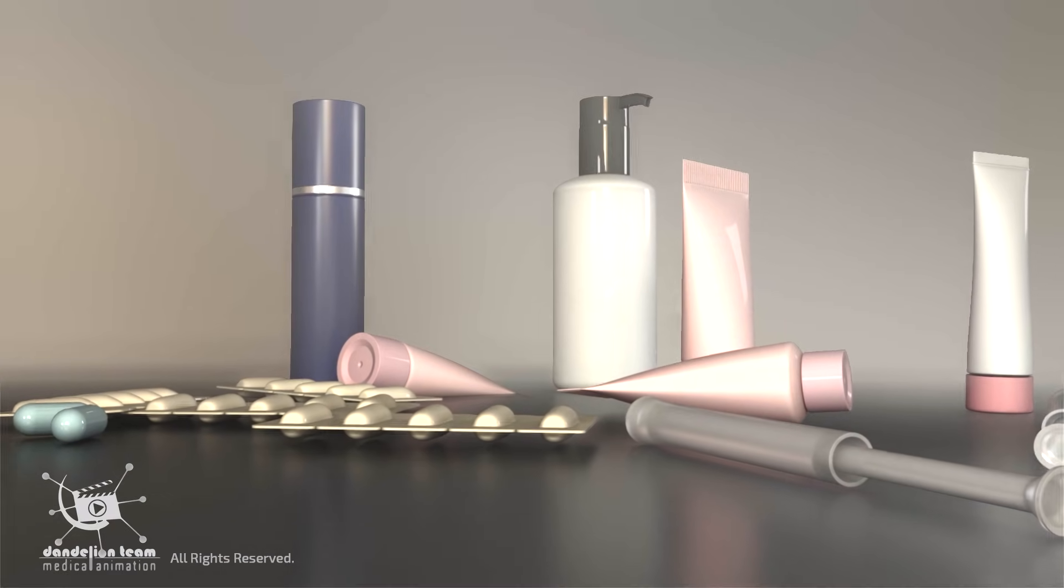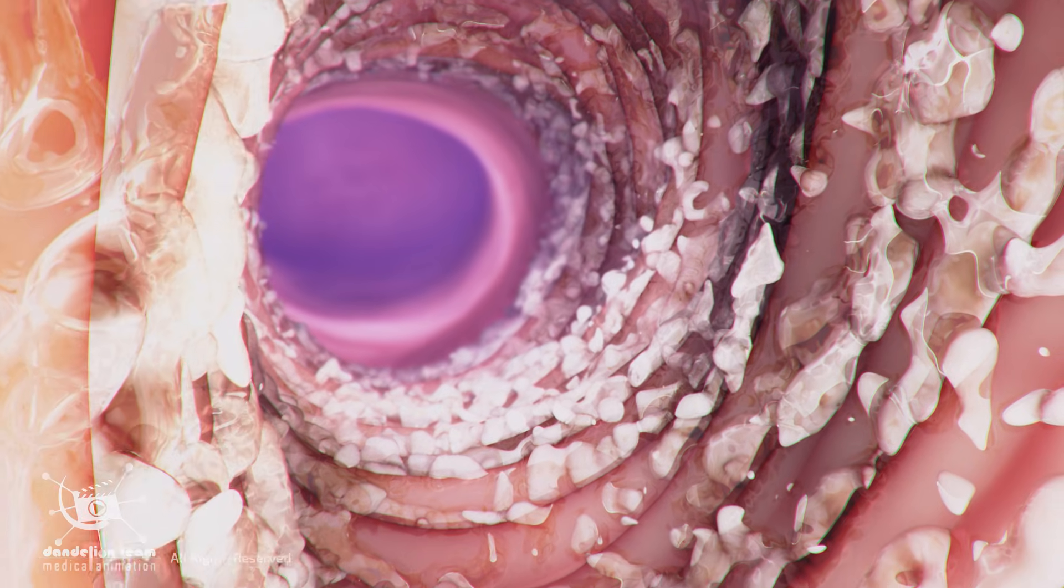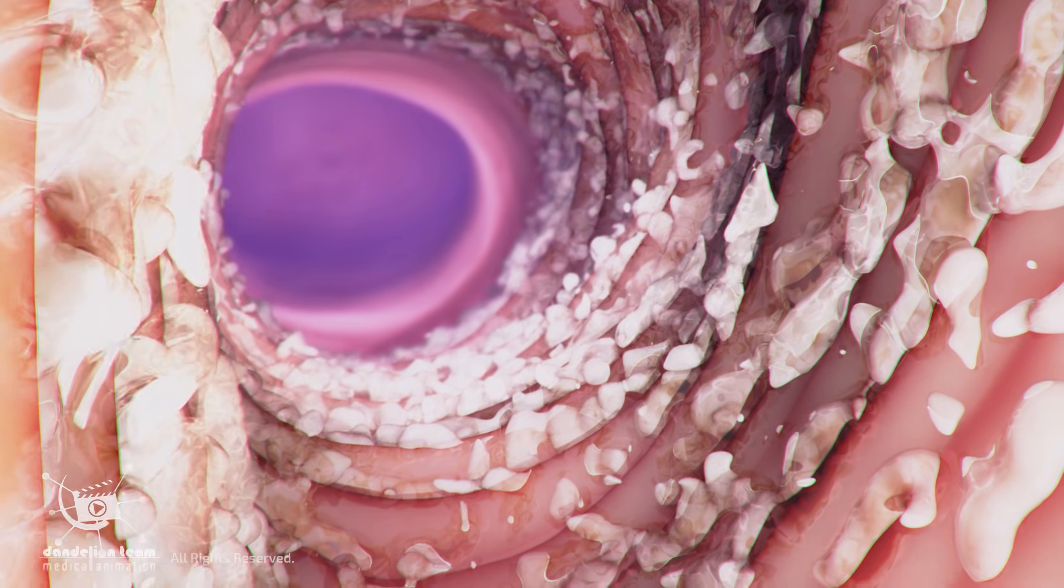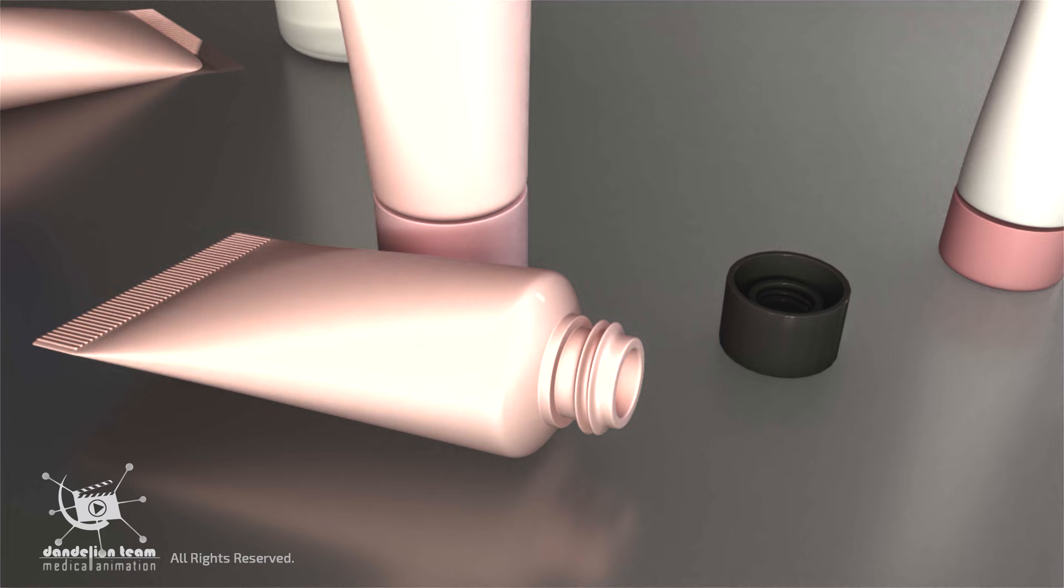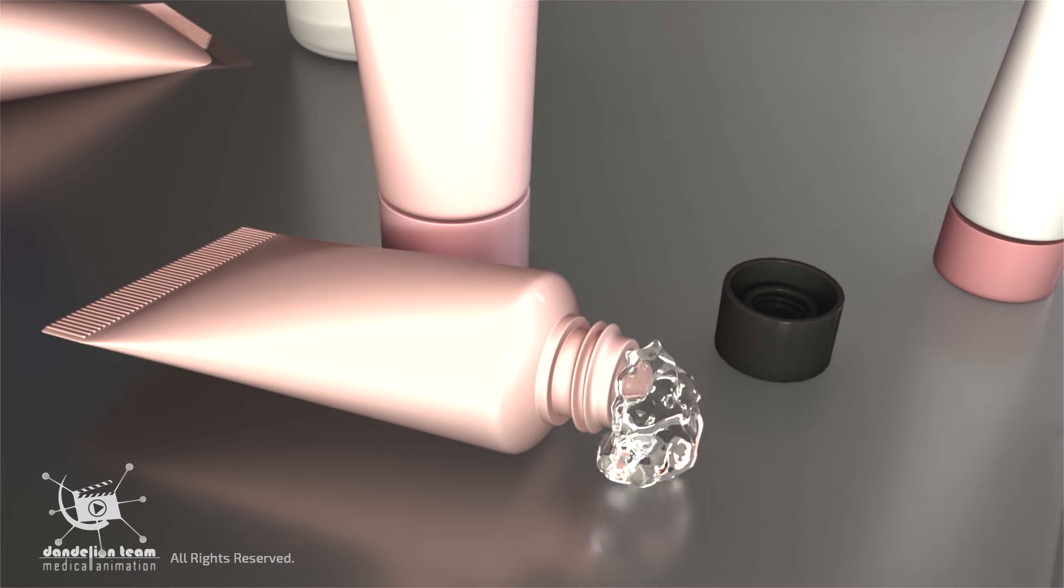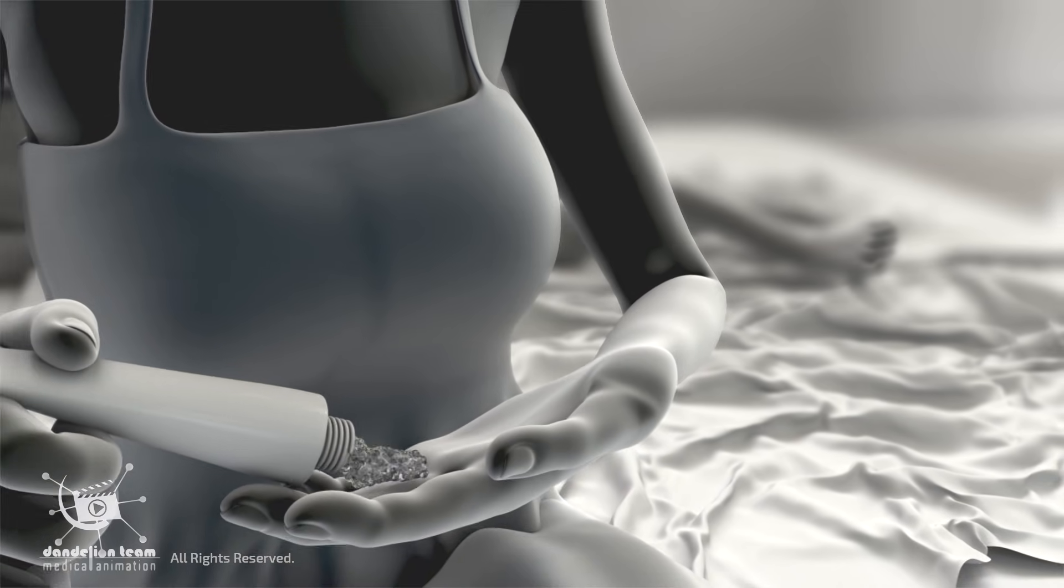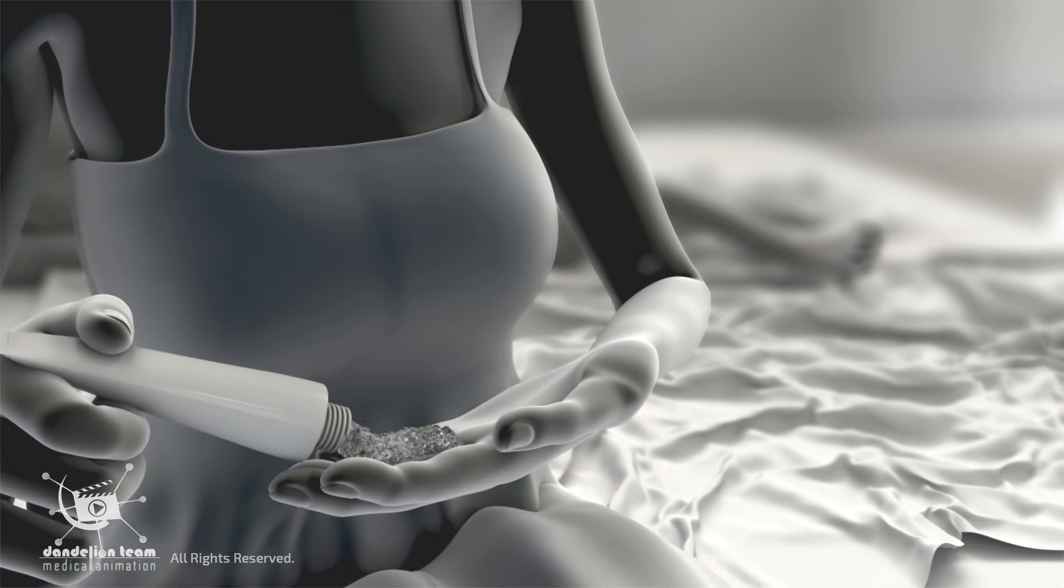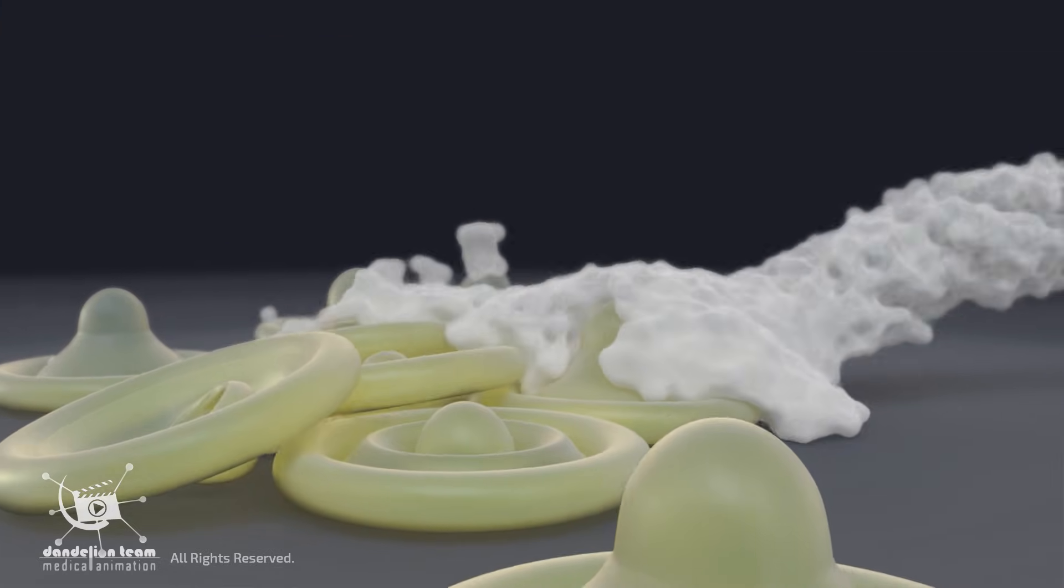Vaginal moisturizers and lubricants are slightly different. Vaginal moisturizers are long-lasting and keep the vagina moist all day. Vaginal water-based lubricants last a short time and are used for immediate lubrication during sexual activity. They are generally safe to use with condoms and are easy to clean up.